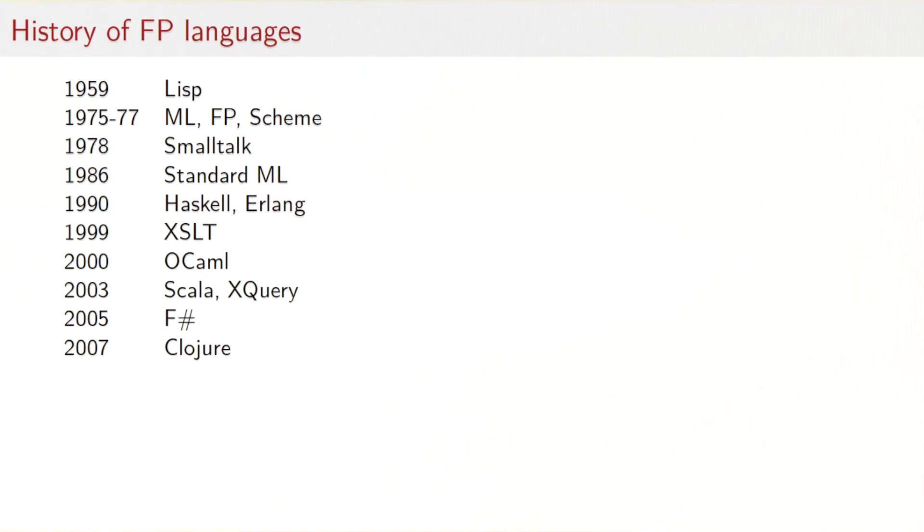If you look at the history of functional programming languages, we find that they date back to almost the beginning of programming languages in general. The first functional language was Lisp invented by McCarthy at the end of the 1950s. Then there was a lot of activity in the 1970s and 80s with ML, FP, Scheme, Smalltalk, Standard ML, reaching into the 90s with Haskell and Erlang. Later languages include OCaml 2000, Scala 2003, F# 2005, and Clojure 2007.